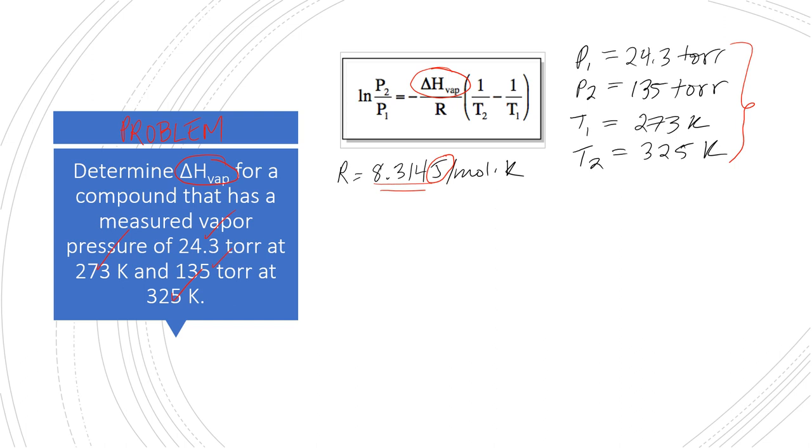Okay, now next up is rearranging this equation to solve for the delta heat of vaporization. Not as bad as it looks. We're simply going to take the negative R and we're going to move it to the numerator over here. And then we're going to take this whole mess over here, one over T2 minus one over T1, and we're going to put it in the denominator over here. What's that going to give us? That is going to give us the equation in the form delta H of vaporization equals ln of P2 over P1 divided by one over T2 minus one over T1 times negative R, our gas constant.